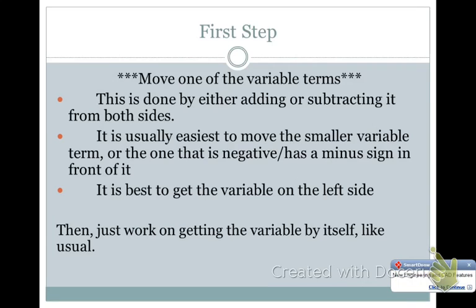The first thing we're going to look at here is just some things that should make it easier to do these problems. The only thing that makes these problems different from what we've done with just two-step equations, or even three-step, is that we're going to first start by taking care of these variables that will be on both sides. So we're going to have to move one of those variable terms. This is done by either adding or subtracting to both sides. So the first step will not be to add or subtract just a number. You'll be adding or subtracting a number with a variable. It's usually easiest to move the smaller variable term, or one that is negative, or has a minus sign in front of it.